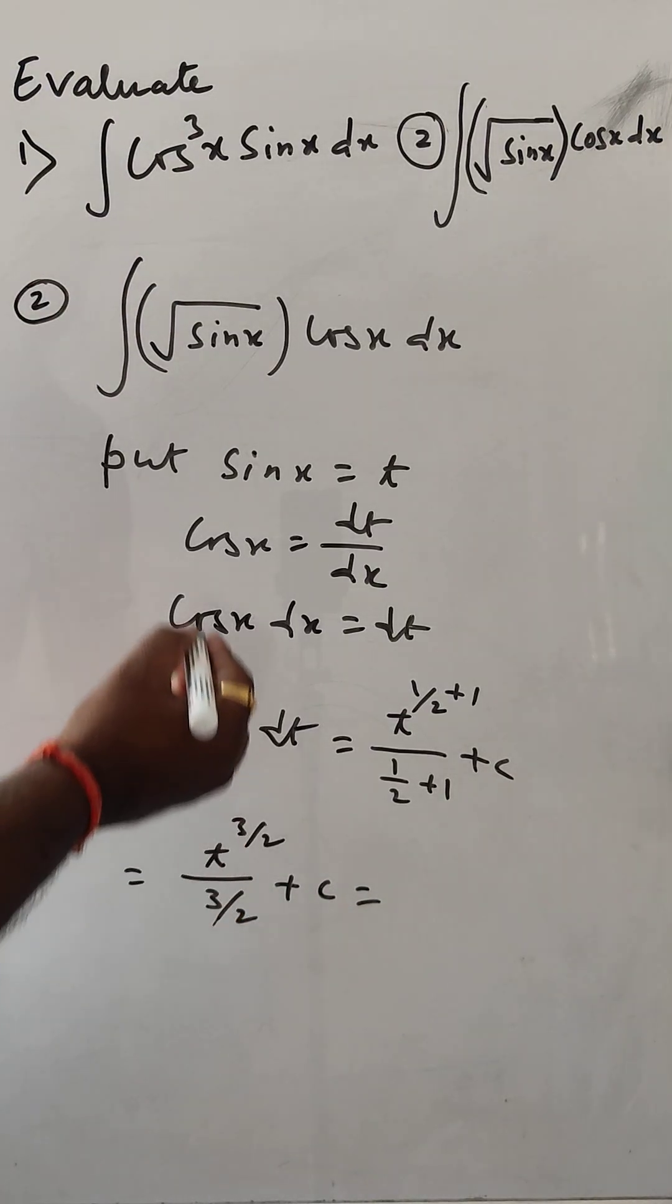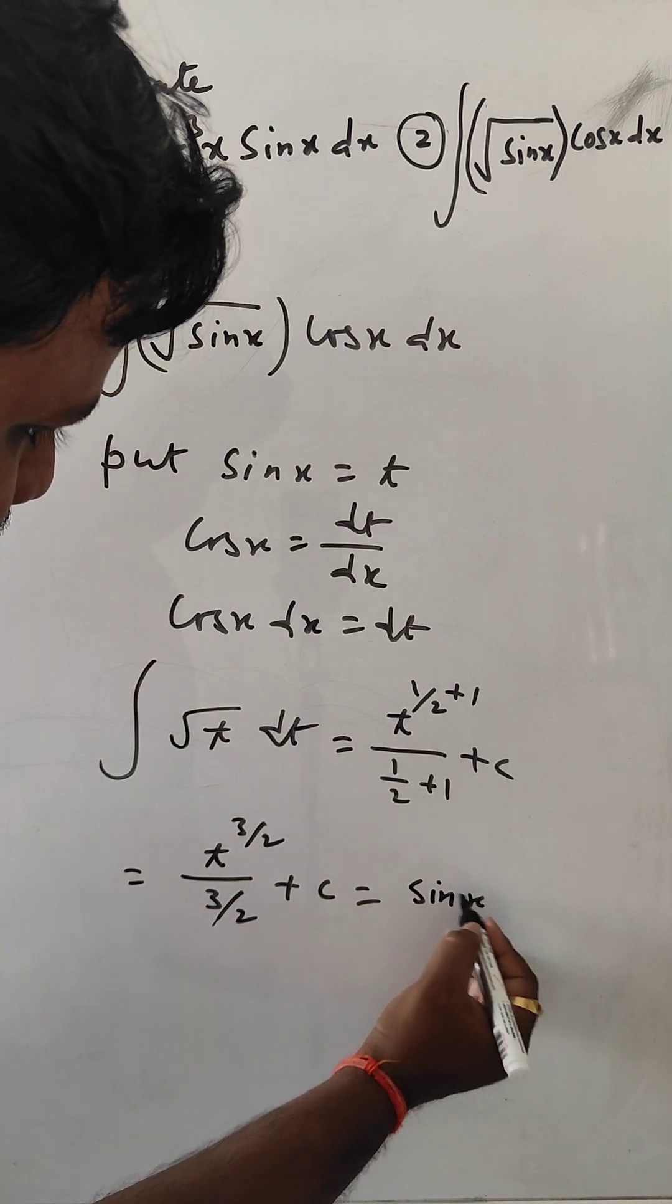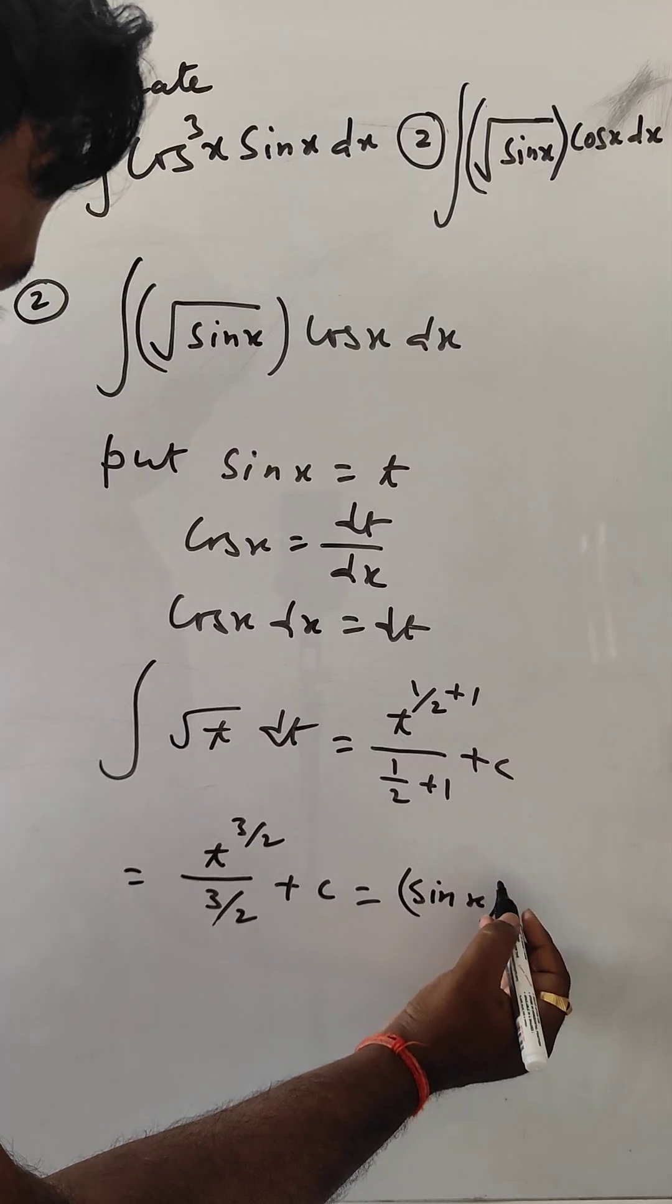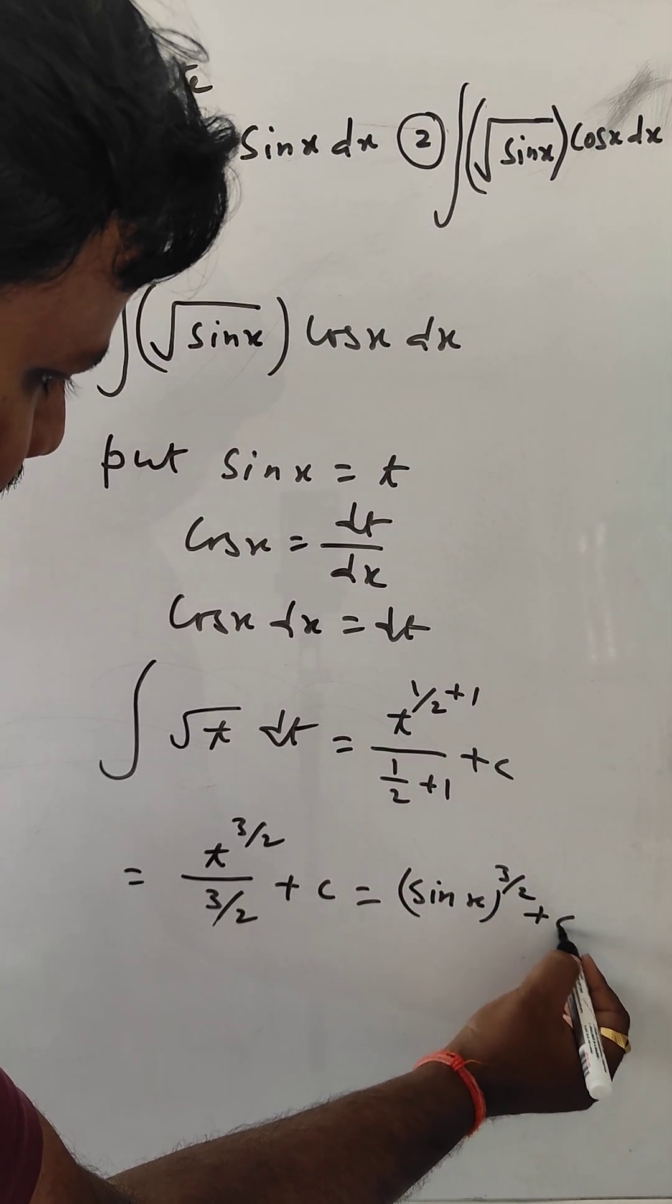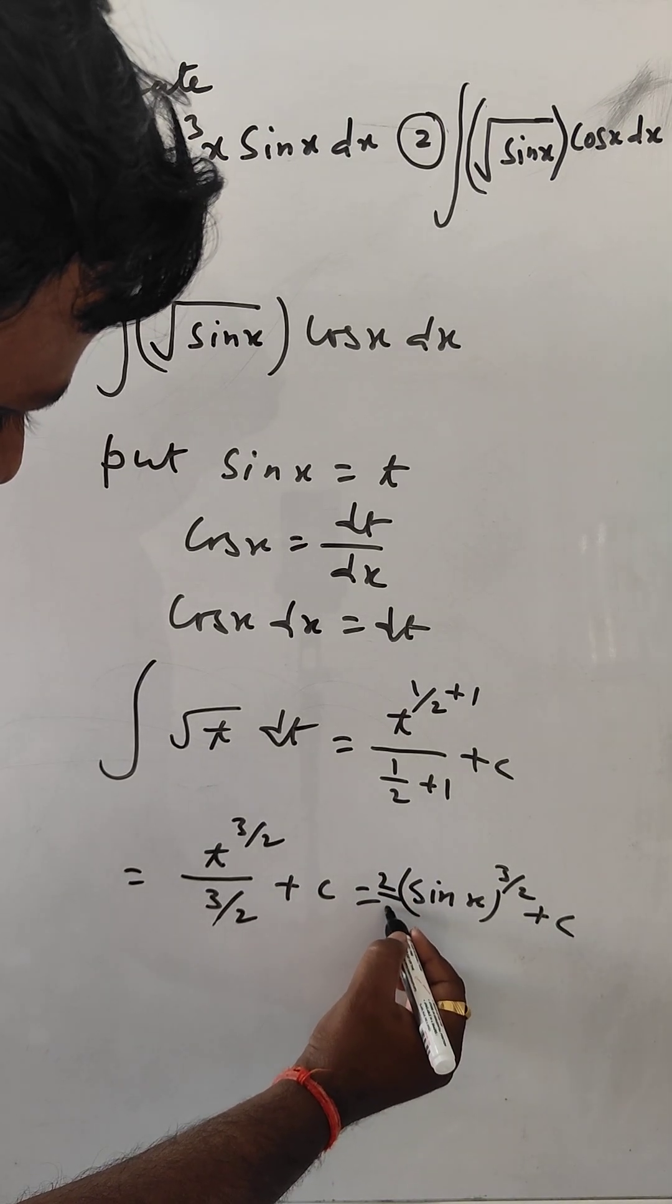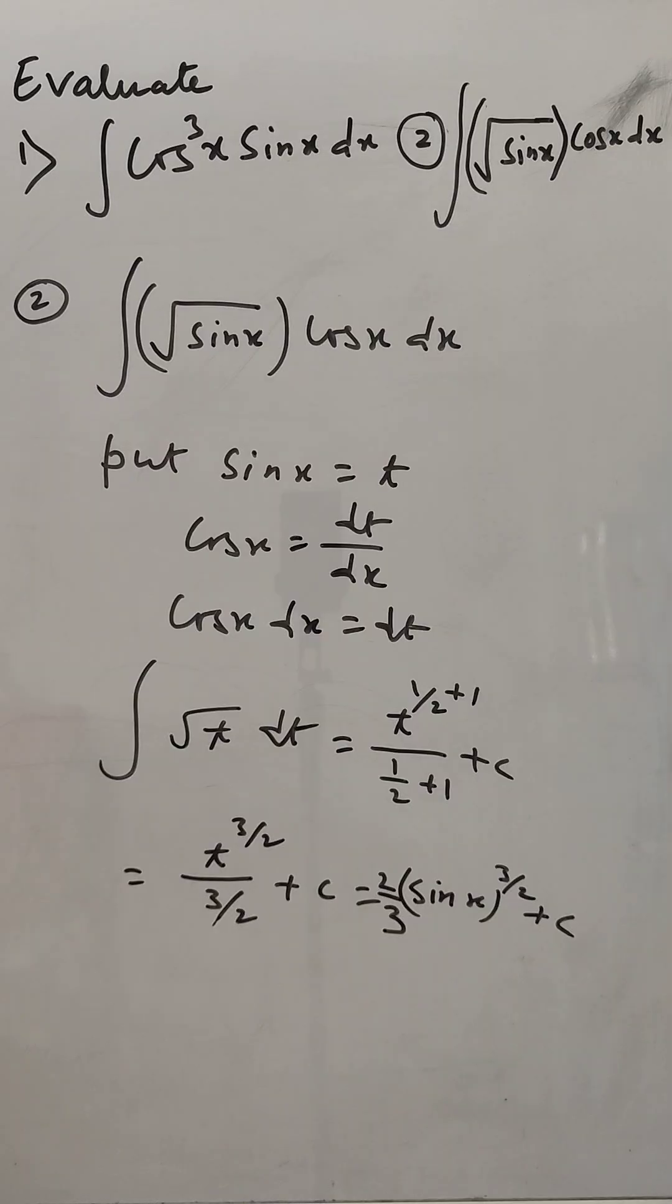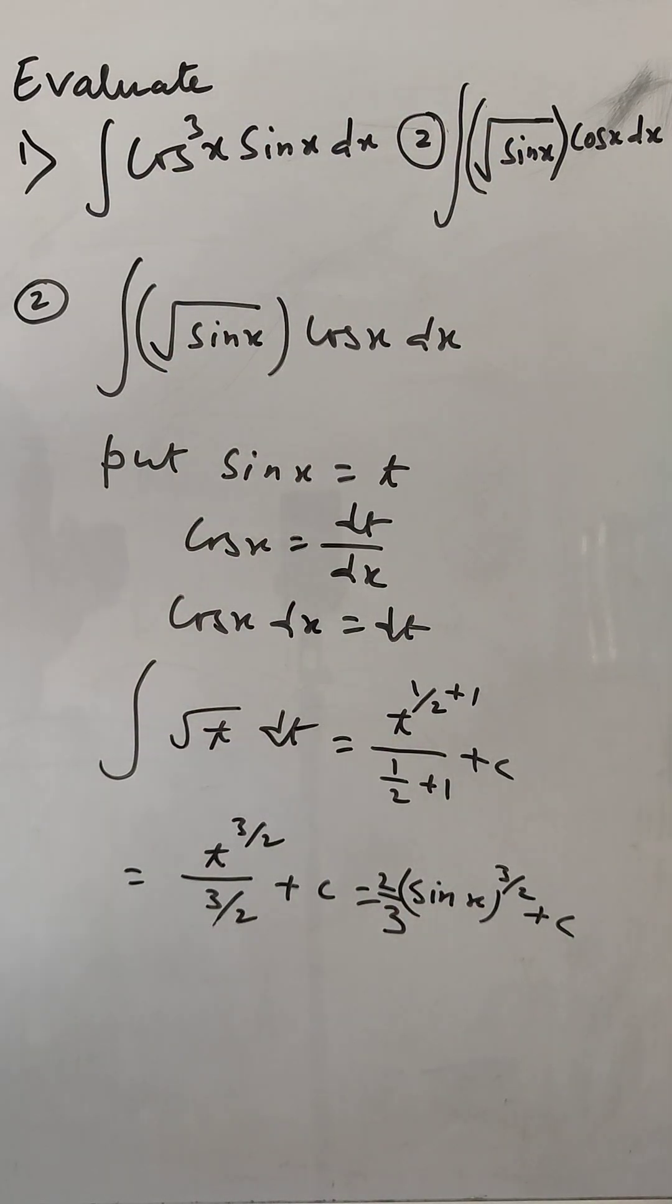The value of t is sin x. So sin^(3/2)(x) divided by 3/2, which equals (2/3)sin^(3/2)(x) plus C. This is the answer to your second problem. Thank you for watching. Please like and subscribe.